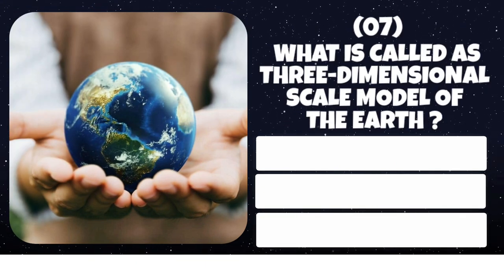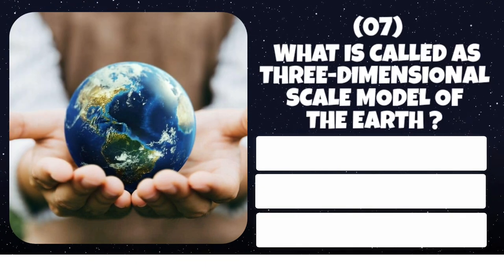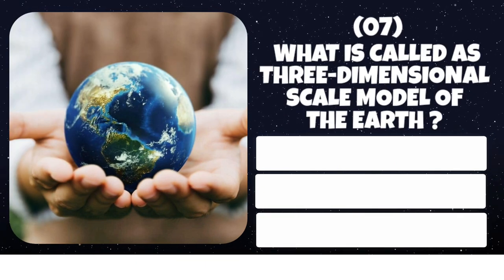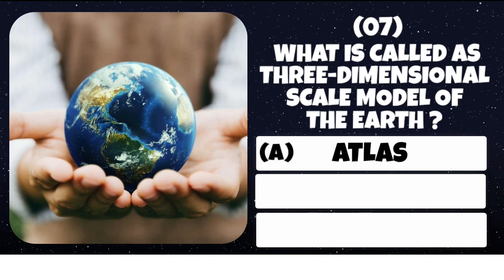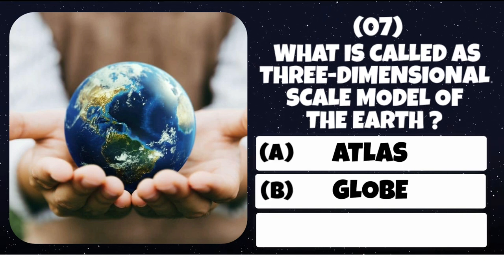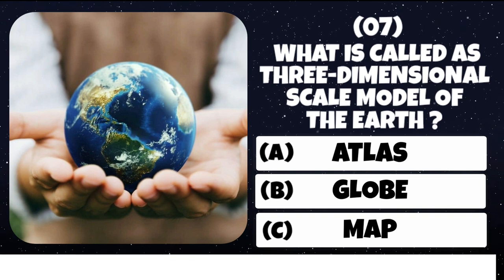Question number 7. What is called a three-dimensional scale model of the Earth? Option A: Atlas. Option B: Globe. Option C: Map.